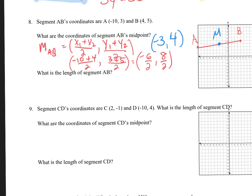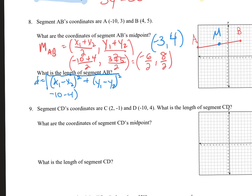Next, it's asking for the length of segment AB — that's the distance formula. Distance equals the square root of: x1 minus x2 squared, plus y1 minus y2 squared. Plug in the numbers: negative 10 minus 4, squared, plus 3 minus 5, squared — all under the square root.